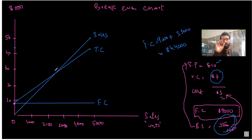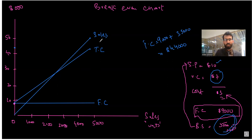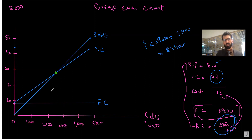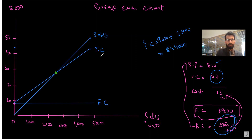The break-even point is where total cost equals revenue. Looking at the diagram, we identify the point where the total cost line and the sales revenue line intersect — this is our break-even point. As we calculated earlier, it is at 3,000 units. It may not be exactly pinpointed on this approximate diagram, but it is at approximately 3,000 units.